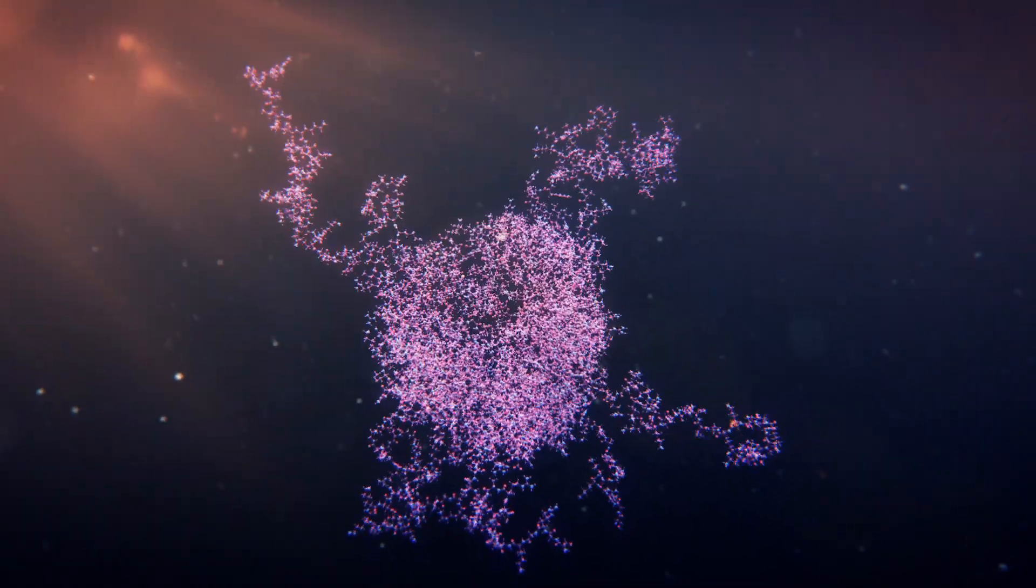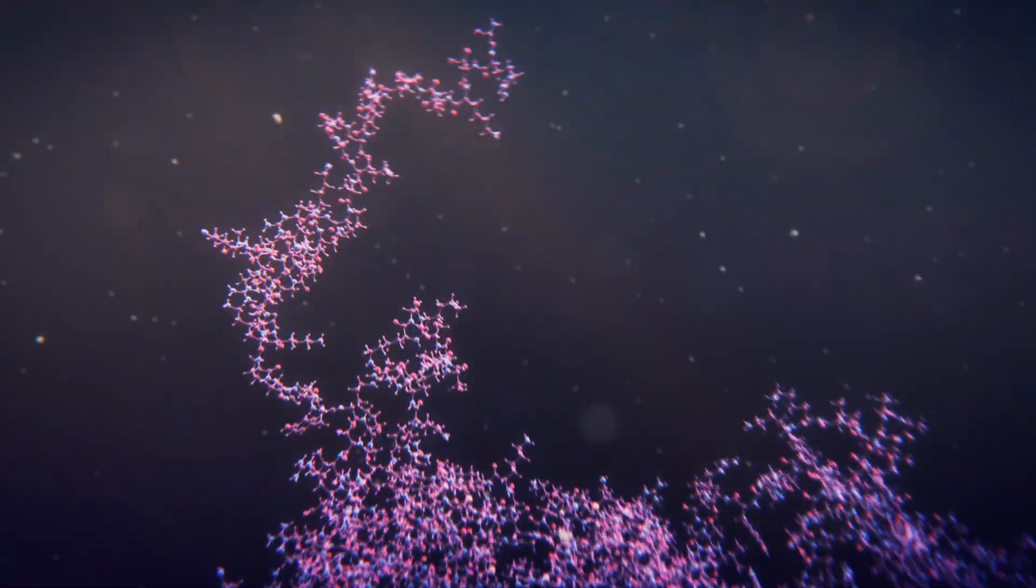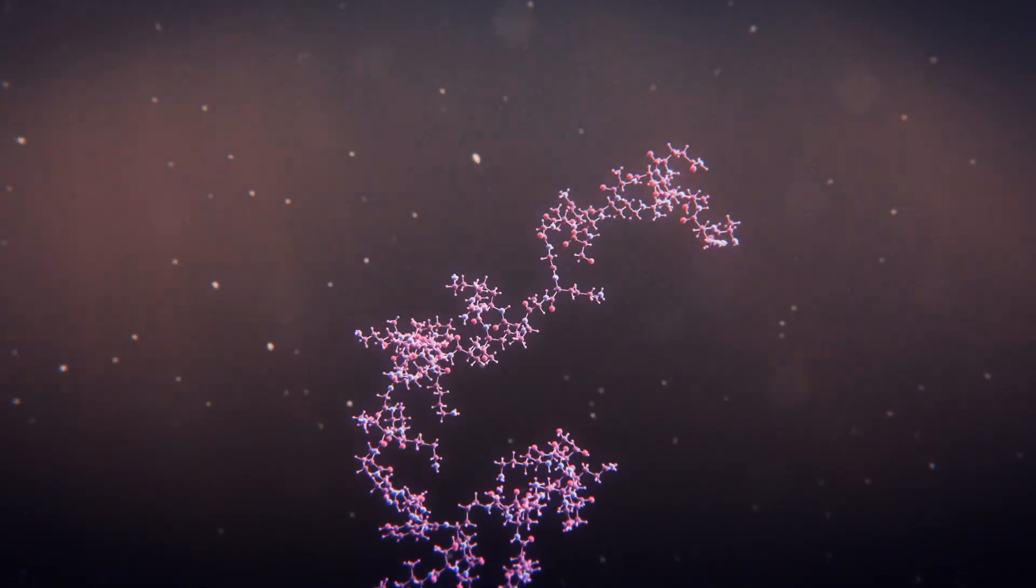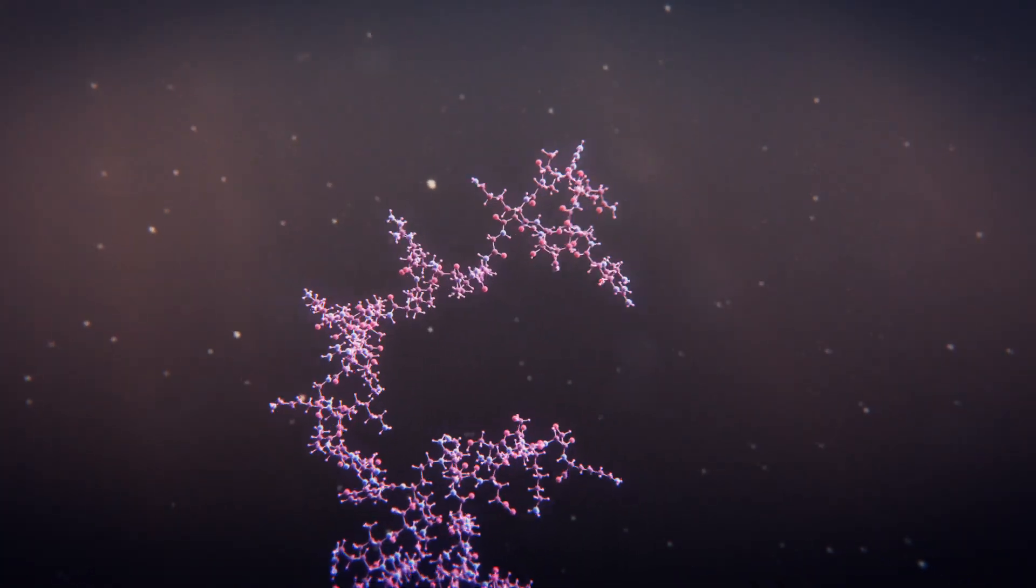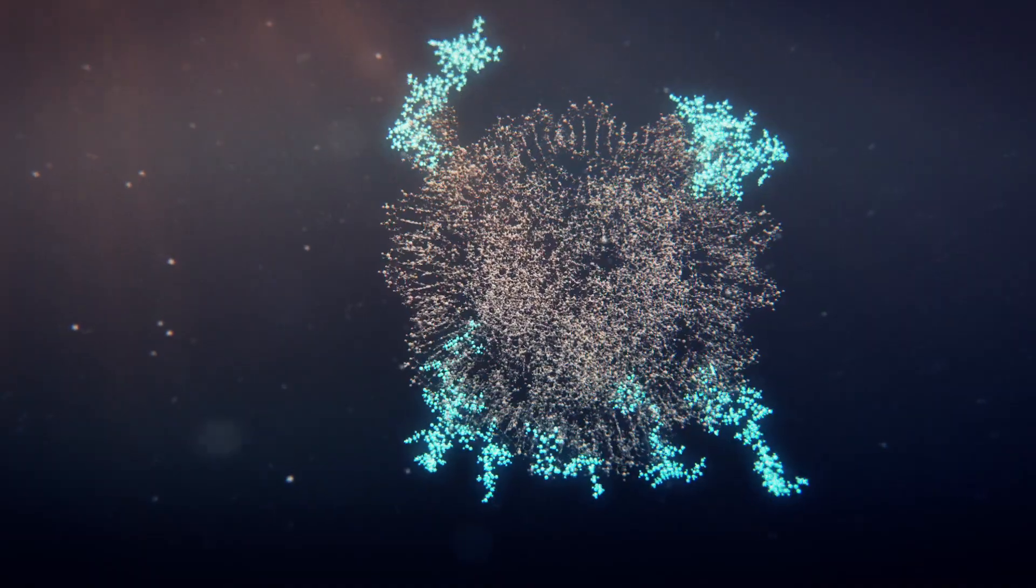It is also known that changes in histone state can alter DNA fluctuation. Histones have unstructured, flexible regions. These are called histone tails.